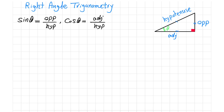This is defined as cosine of theta, the angle theta. Tangent of theta is defined by the value of the opposite side divided by the adjacent side.